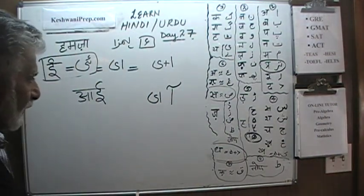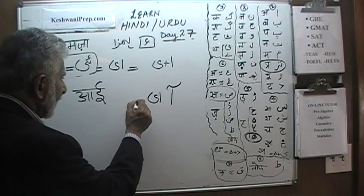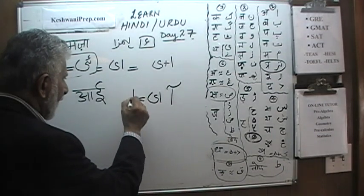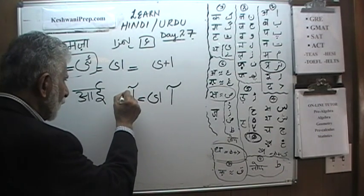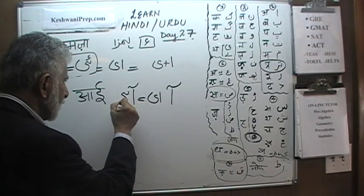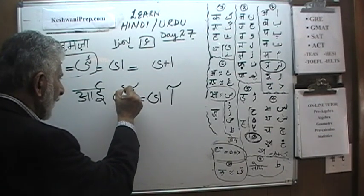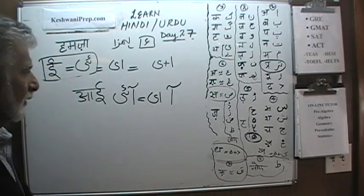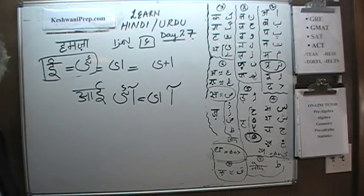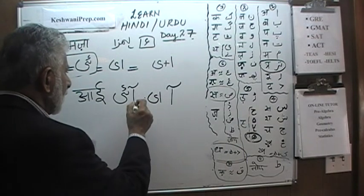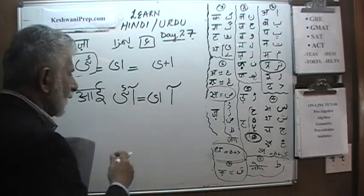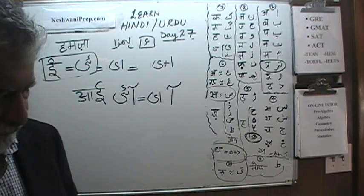How does 'ai' look? It looks like this: you write aa, then make a small loop, continue to Chhotiyeh, and put a Hamza there. And we just wrote our very first word with Hamza.